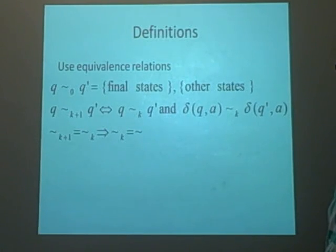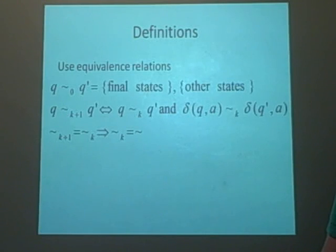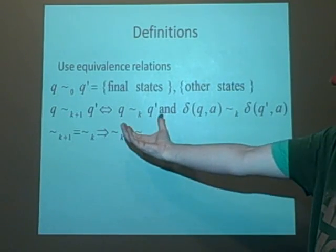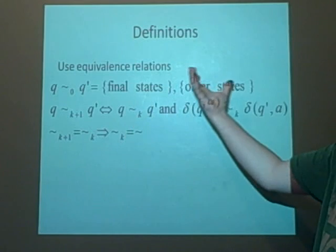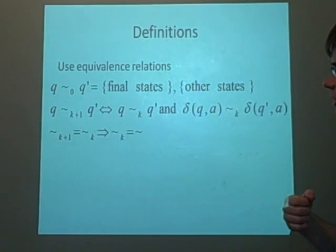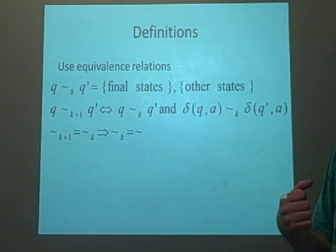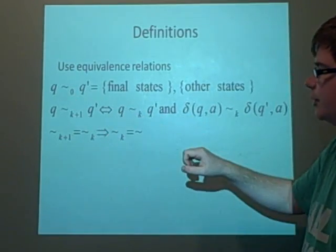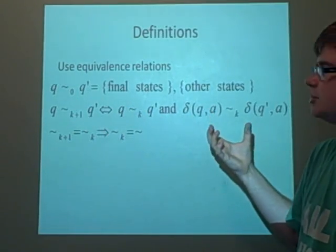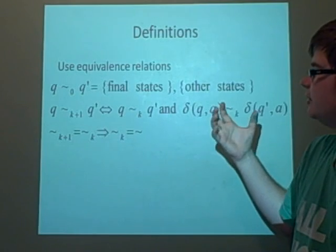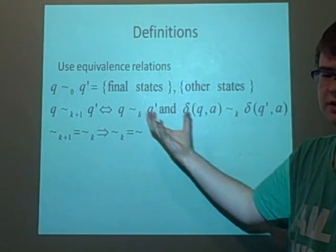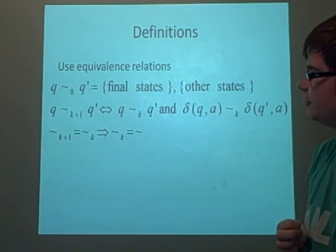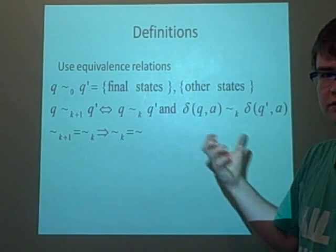We do this using equivalence relations. An equivalence relation is just saying one state is the same as another state. To initially divide them up, our zero equivalence — this is where we start off with — these will be the final states, and any other states that aren't final. So that's how we pair those off together.